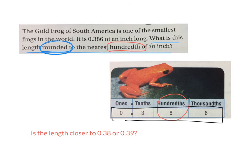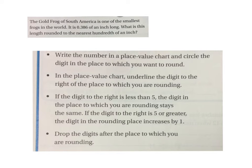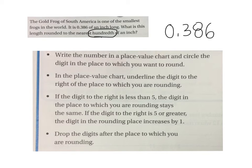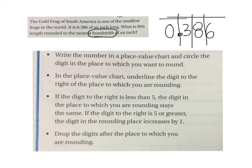The exact length was 0.386. What place value is the question asking us to round to? Hundredths. Circle where it says 'round to the nearest hundredth of an inch' in your workbook. Your first step is to write that number in a place value chart. Circle the digit in the place where you want to round. What digit is in the hundredths place? Eight. So we're going to circle the eight.